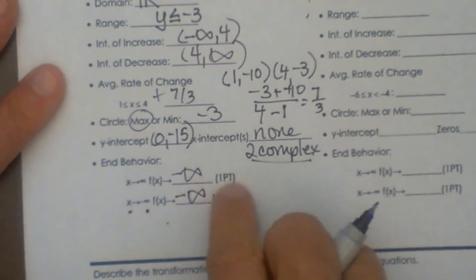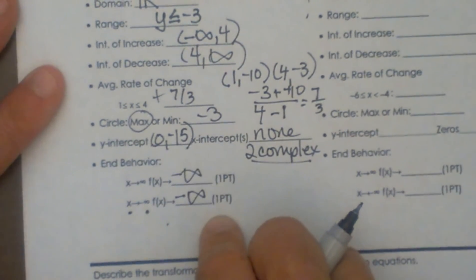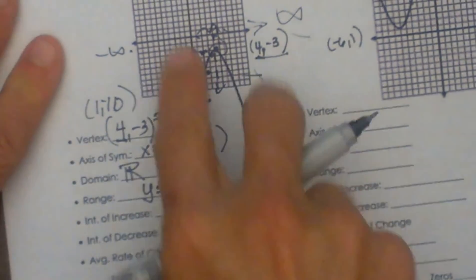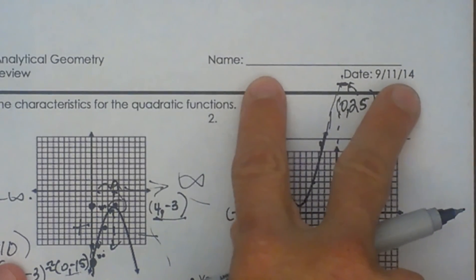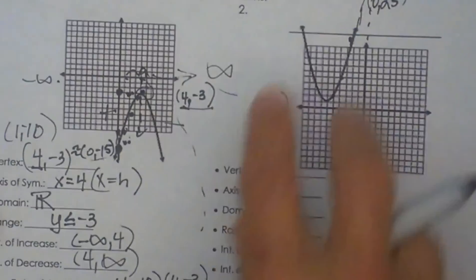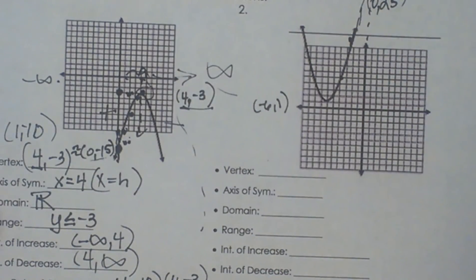Now notice on a quadratic these end behaviors are always going to be the same. Either your graph is going to go down and down as it goes out or in this case it is going to go up and up. Ok so the end behaviors on quadratics are going to be the same.